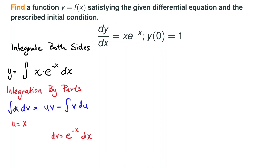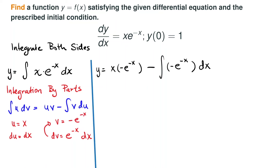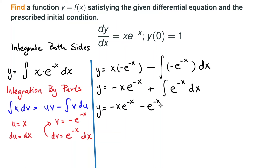The integration by parts formula says the integral of u dv equals u times v minus the integral of v du. We choose u to be x, so du equals dx. Our dv term is e to the negative x dx, and integrating that gives us v equals negative e to the negative x. Applying the formula and simplifying, the remaining integral of e to the negative x is negative e to the negative x, plus our constant of integration.